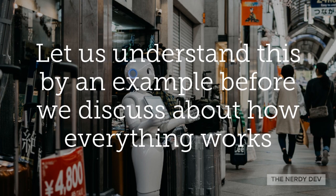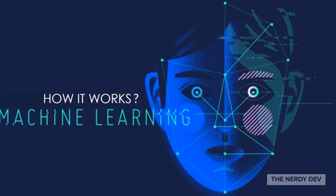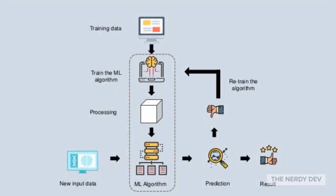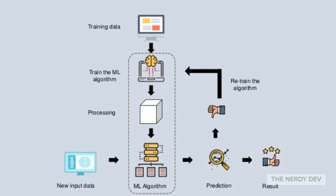Let us now see how machine learning actually works. It starts with gathering past data in any form suitable for processing — the better the quality of data, the more suitable it will be for modeling. Sometimes the data collected is in raw format and needs to be pre-processed. For example, some rows in your dataset may have missing values for certain attributes, and in this case they have to be filled with suitable values in order to perform machine learning or any form of mining.